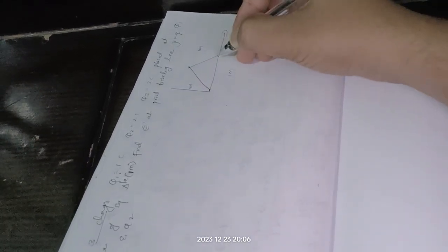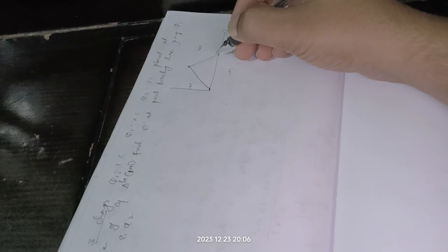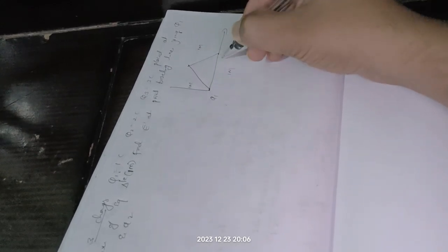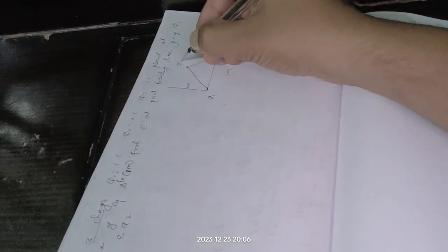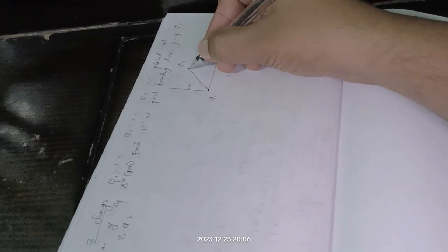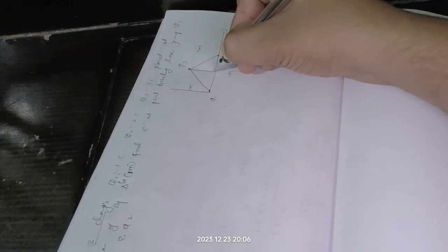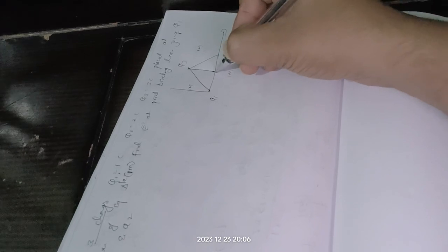So here, find E at the point bisecting the line joining q1 and q2. So we will take this as q1, this as q2, this as q3. So the line you should find E at the point bisecting this line joining q1 and q2.